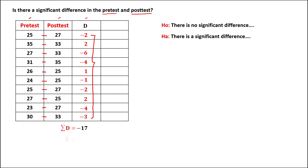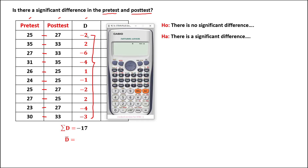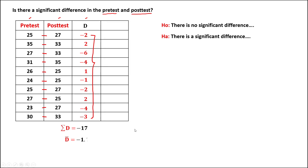Then we need to find the average, or the mean, of this difference. From the sum of the differences, that's negative 17, divide by the sample size. Since we have 10 samples, divide by 10 to find the average. Therefore, the average of the difference is negative 1.7.